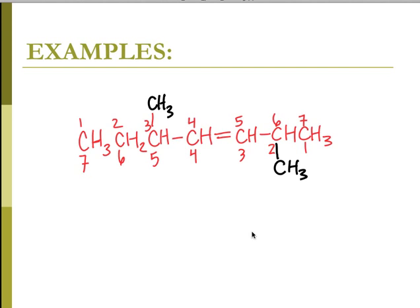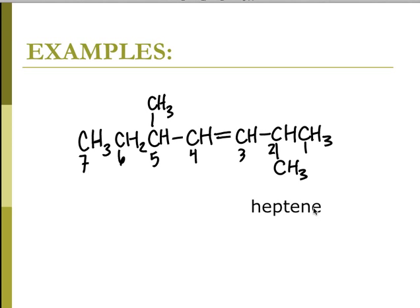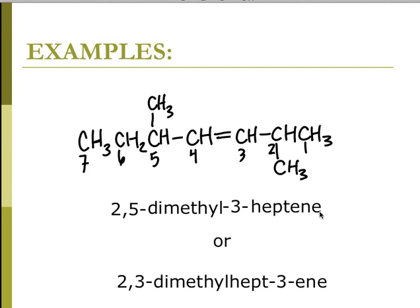Here's another one — pause it. Number them so that we get to the functional group while minimizing the numbers. I'm going to start from that end so my functional group is on the second carbon. It is a heptene because of the double bond. The double bond is at the third carbon, and I have two methyl groups at positions 2 and 5: 2,5-dimethylhept-3-ene.